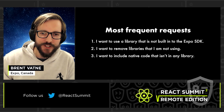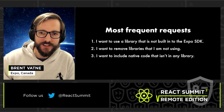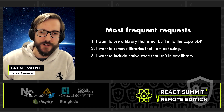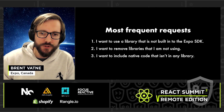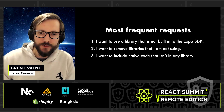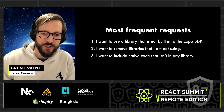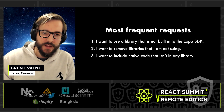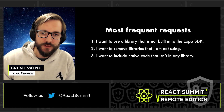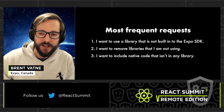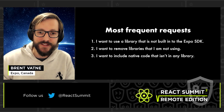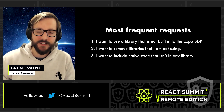First, I want to use a library that is not built into the Expo SDK — for example, React Native WebRPC. Second, I want to remove libraries that I'm not using, for example to reduce the app size. And third, I want to include native code that I'm going to write myself and that isn't in any existing library.